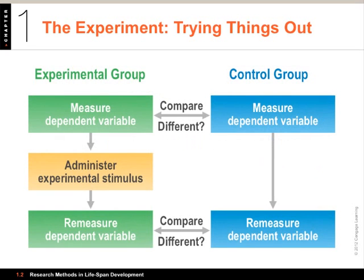When you design an experiment, you usually split people into at least two groups. You might take people and split them into an experimental group — who receives a particular treatment, a different way of learning, or a different method of confronting a problem — and a separate control group. Ideally, you randomly assign people to these two groups, which creates what's called probabilistic equivalence, meaning differences tend to cancel out across the groups. You may also want to do a pretest to measure the dependent variable — the outcome you want to examine — before anything happens.